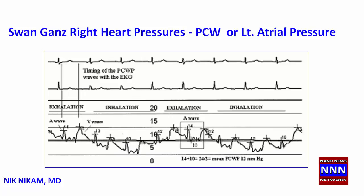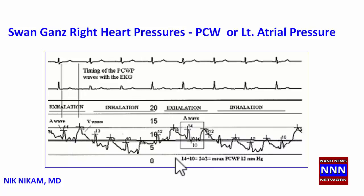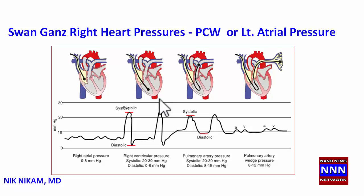One more important thing about the pulmonary capillary wedge waveform is respiratory variation. During inhalation, the pressure waveform dips, and during exhalation the pressure waveform goes up. The computer automatically calculates the average of these waveforms to get the mean left atrial pressure, or the pulmonary capillary wedge pressure.